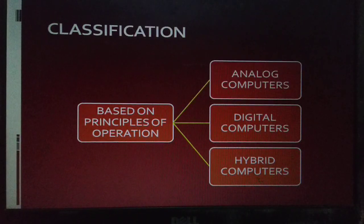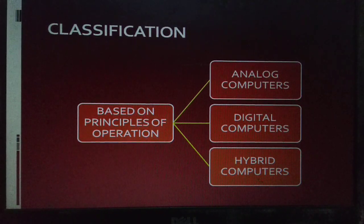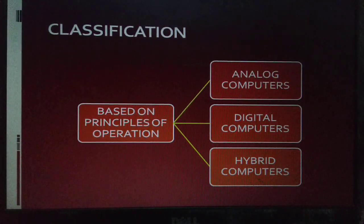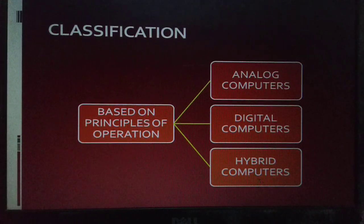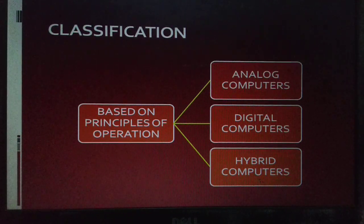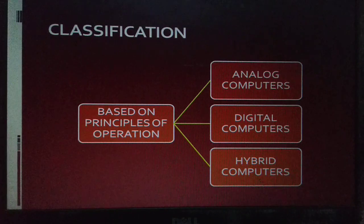Let's understand classification of computers based upon these values. Classification Based on principles of operation. So, based on the principles of operation or fundamental way of working, computers have been classified into three categories: Analog Computers, Digital Computers, and Hybrid Computers.